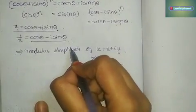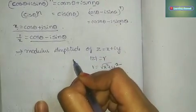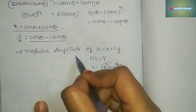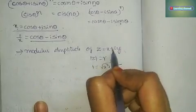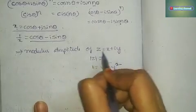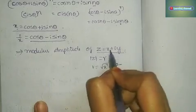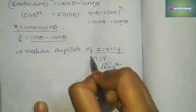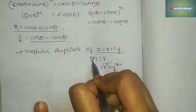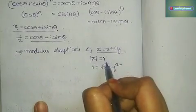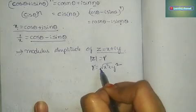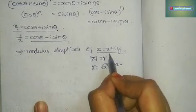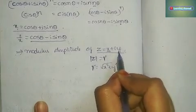We also need to know modulus and amplitude, which we learned in complex numbers. For z = x + iy, mod z = r, where r is equal to the square root of x² + y².